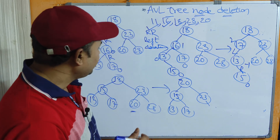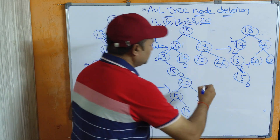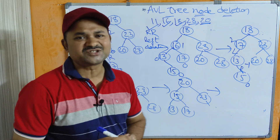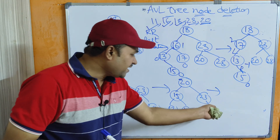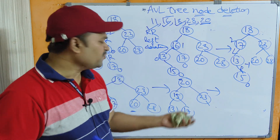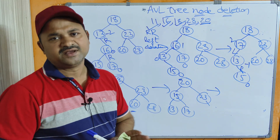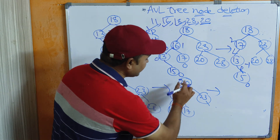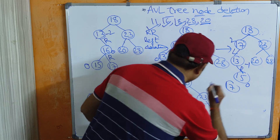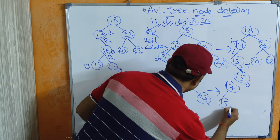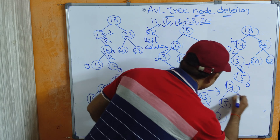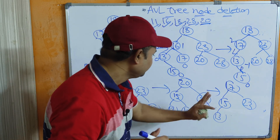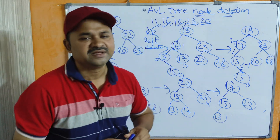The last deletion is node 20. Compare 20 with 20 — same, found. Node 20 has two children. This time let us follow the inorder predecessor approach — left subtree maximum value. The maximum value in the left subtree is 17. So replace 20 with 17. The final tree has 17 as root, with left subtree containing 15 and 13, and right child 23. This is the final tree after performing all the deletions.